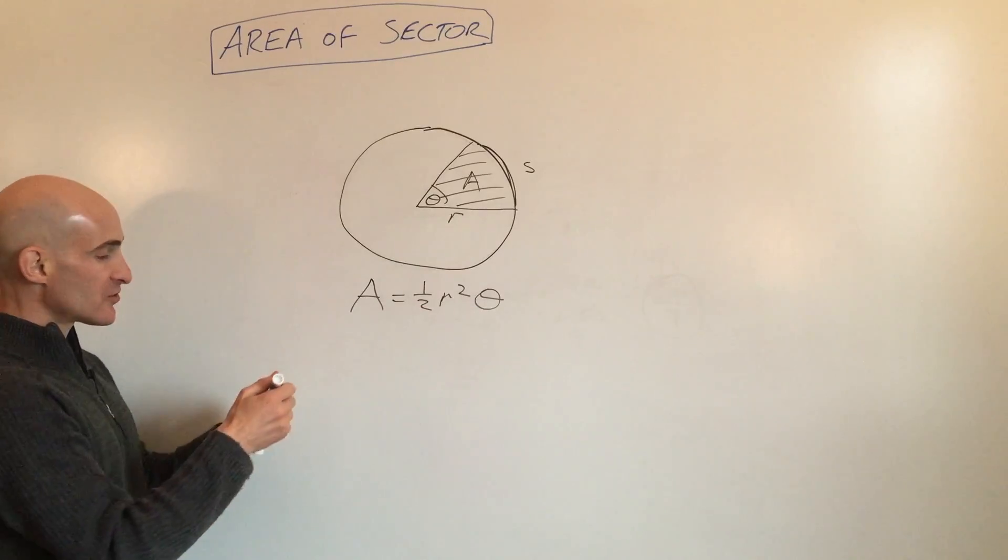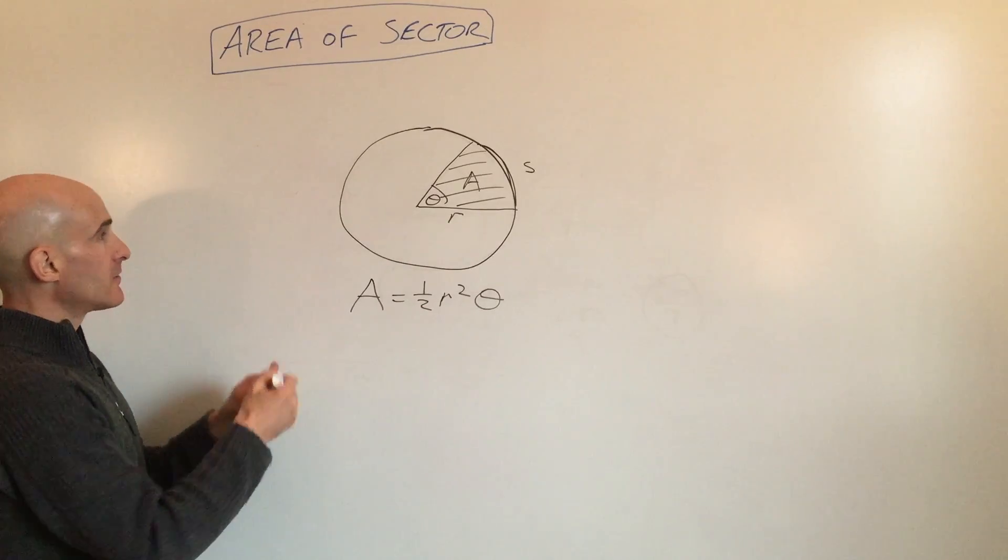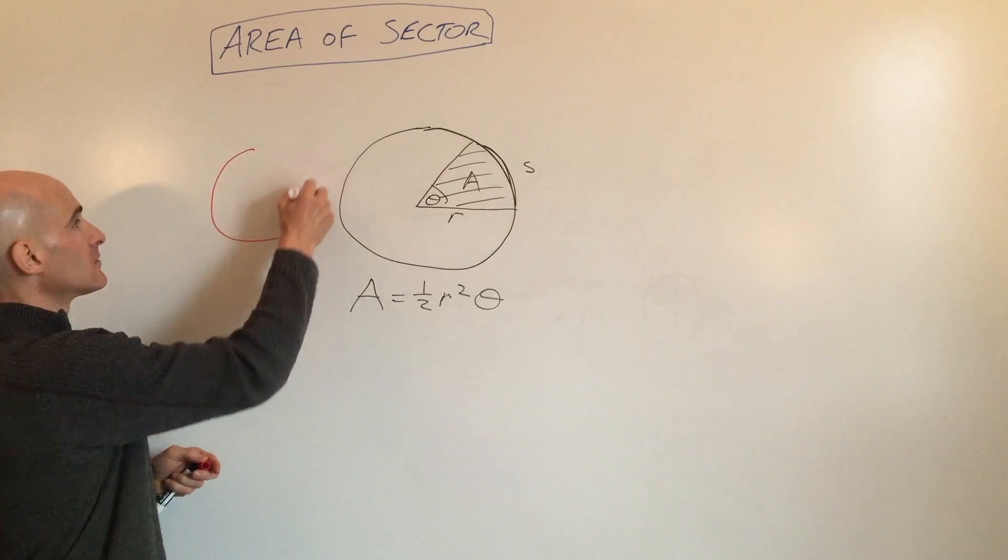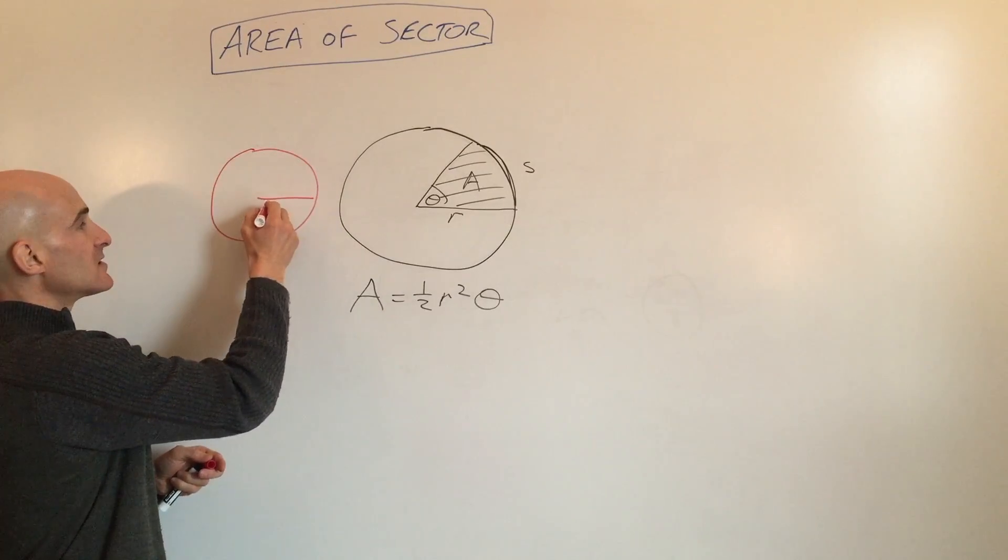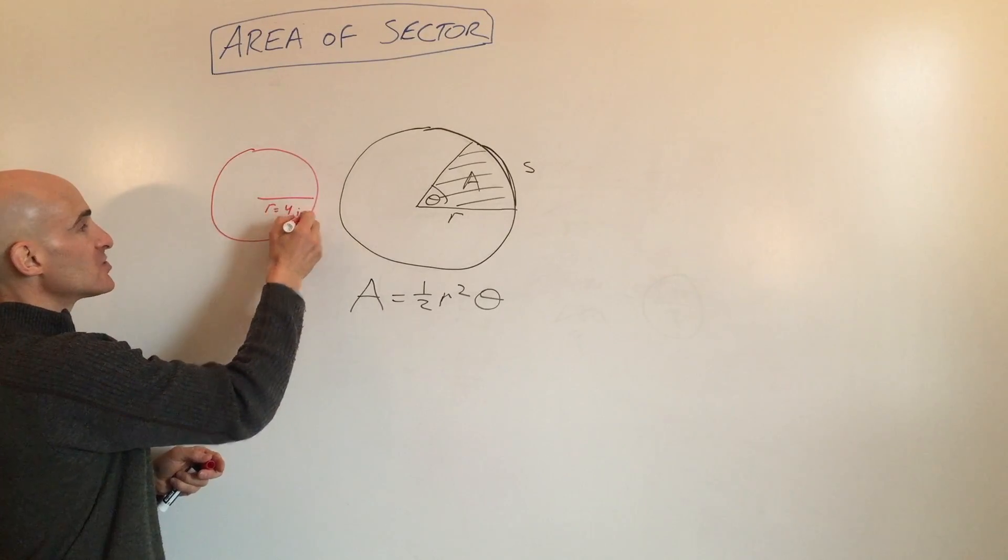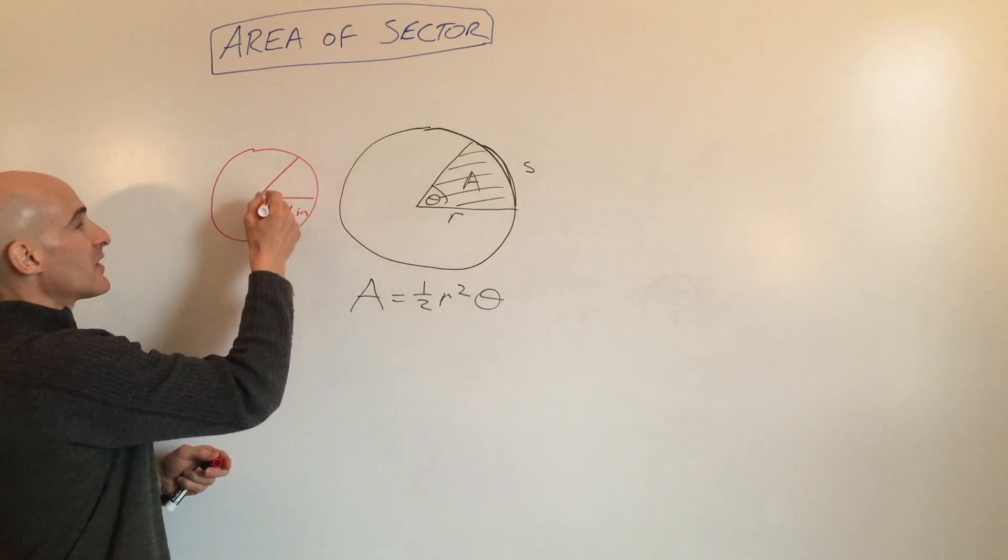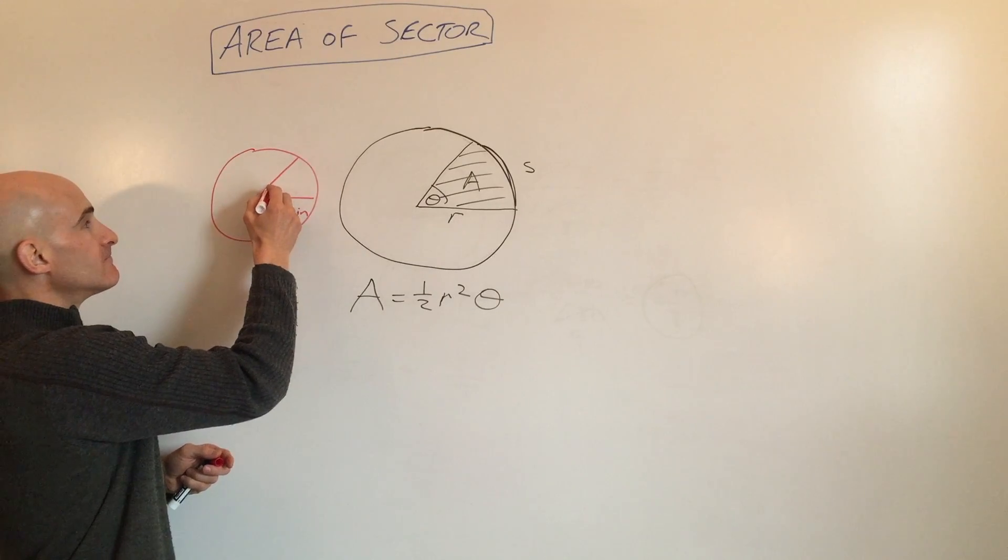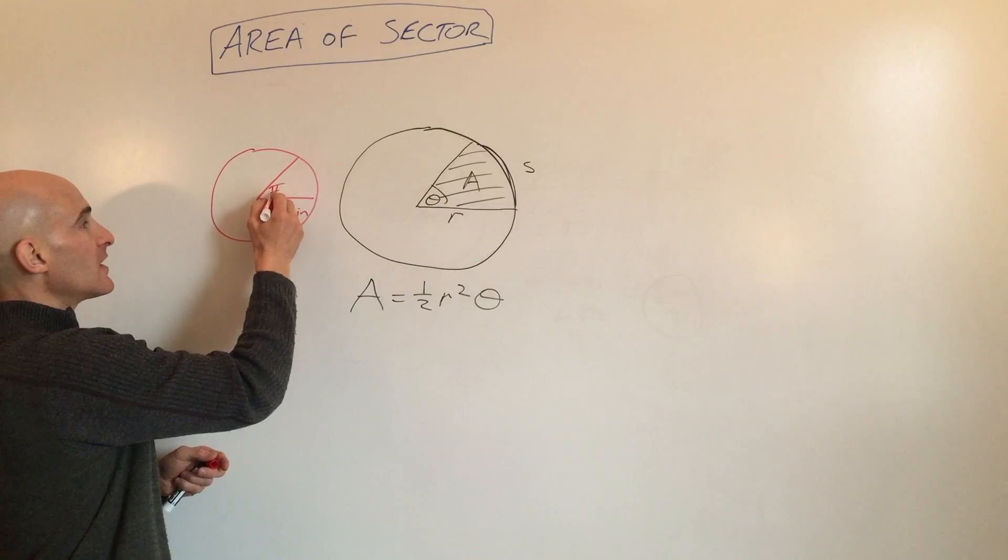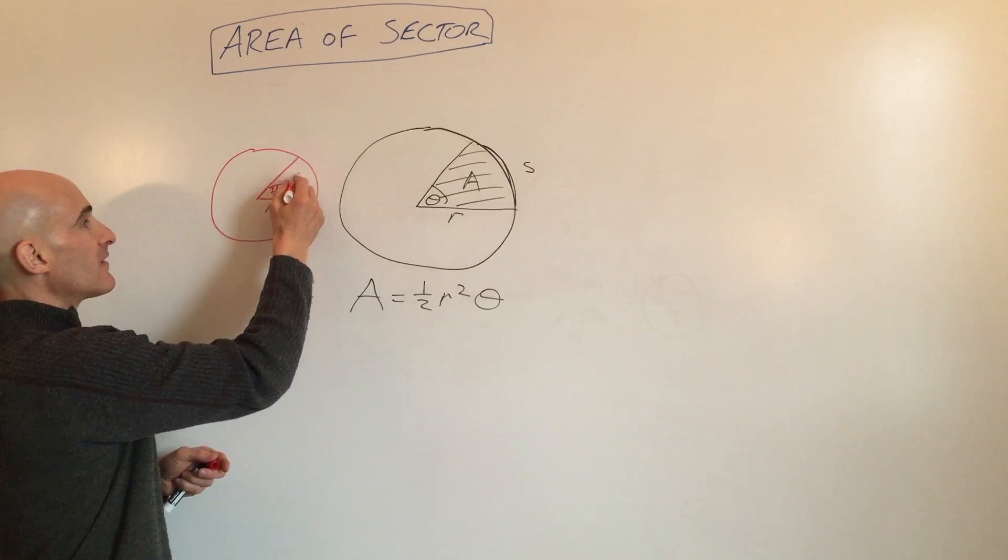So let's do an example. Let's say we have a circle like this. Say the radius is four inches. Say the central angle is pi over six radians. And we want to find the area.